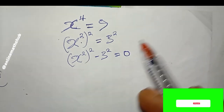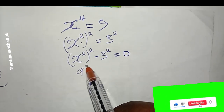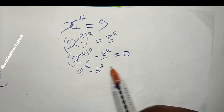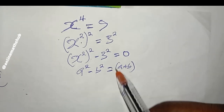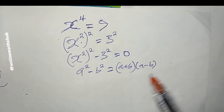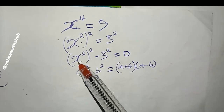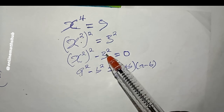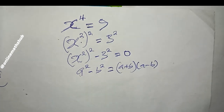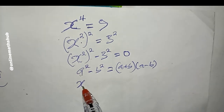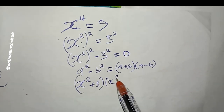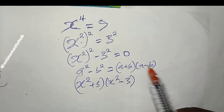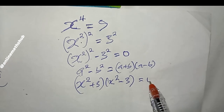Clearly, what we have here is a difference of two squares. You can recall that a² minus b² expands to (a + b)(a − b). Applying that here, my a is x² and b is 3, so I get (x² + 3)(x² − 3) = 0.